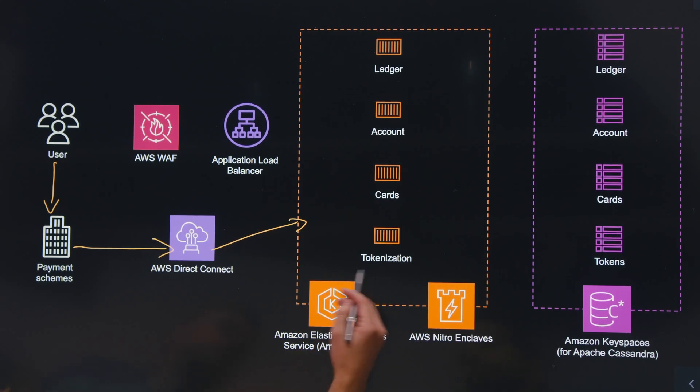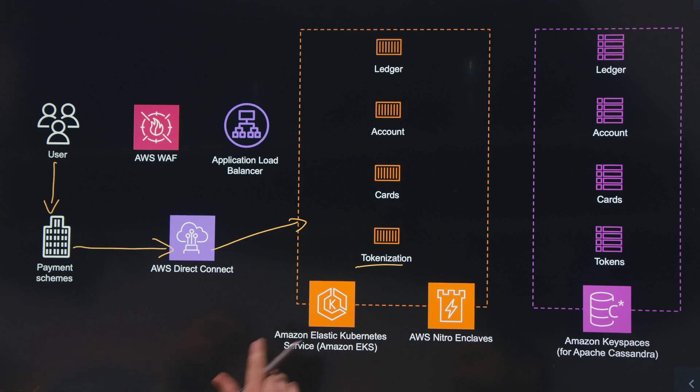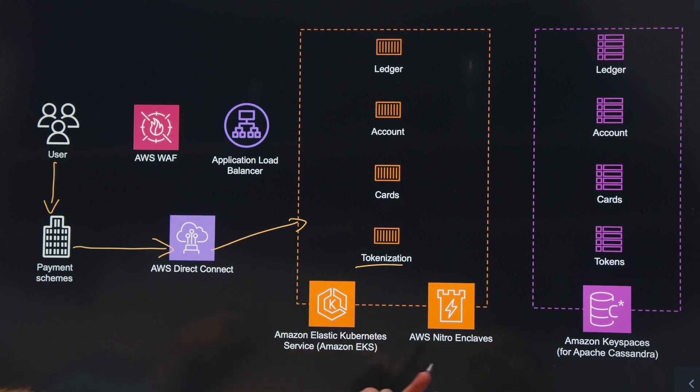At this point we don't want to be passing any sensitive card details through our platform, so that hits our tokenization service. This just removes all sensitive information, so you're just dealing with a token rather than an actual card number. Presumably these are microservices, because I see that you're pairing some of these services with databases. Yes, that's right. We've got about 2,600 microservices on our platform at the moment, which are all within Kubernetes, so EKS. The basic flow is that every microservice that needs to store state will have a database associated with it, which we're storing in Keyspaces.